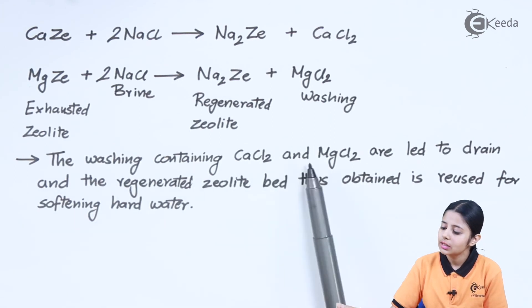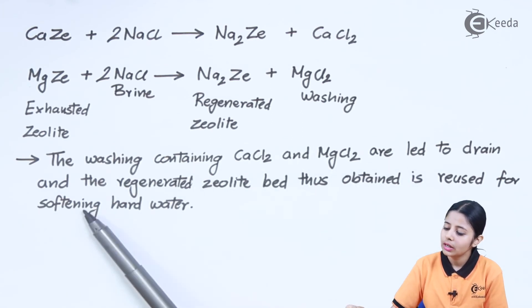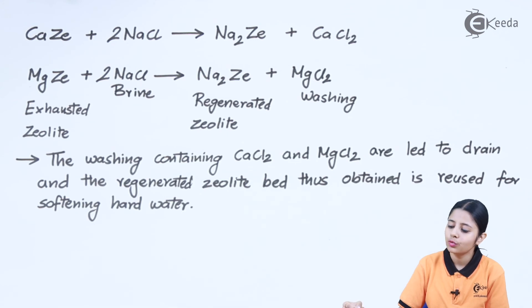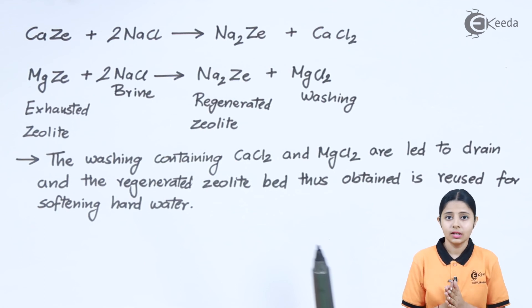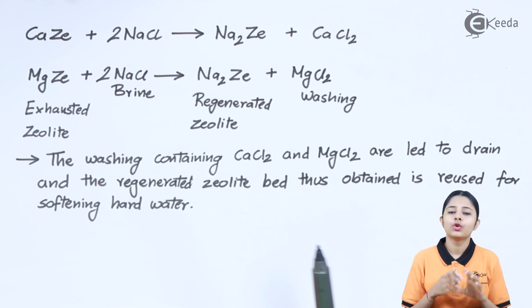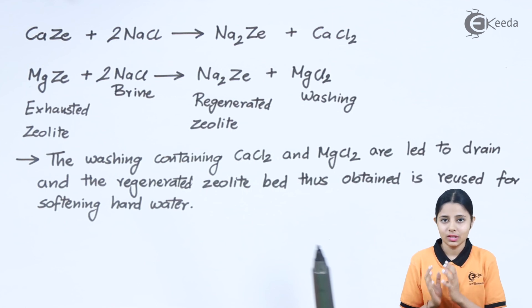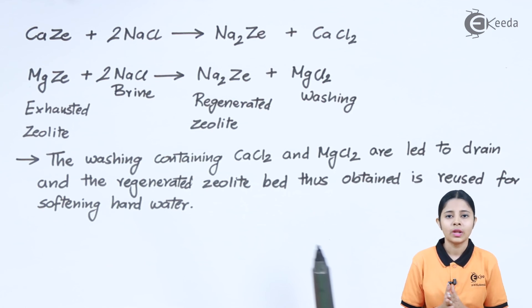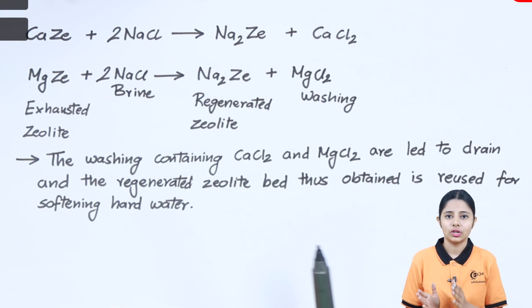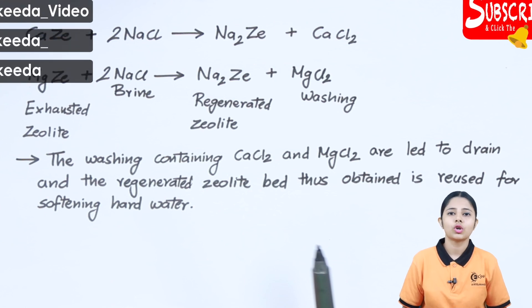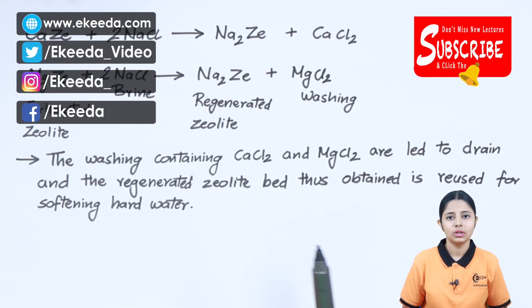The washing containing CaCl2 and MgCl2 are led to drain, and the regenerated zeolite bed thus obtained is reused for softening hard water. In today's video we studied the zeolite permutite process — how zeolites exchange sodium ions with calcium, magnesium, iron, and manganese to convert soluble impurities into insoluble ones, turning hard water into soft water, and how the exhausted zeolite bed is regenerated for reuse. Thank you for watching. Stay tuned and subscribe.